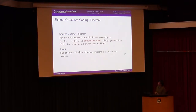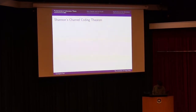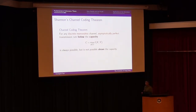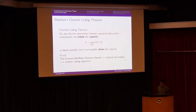The proof of the source coding theorem follows from the Shannon-McMillan-Breiman theorem and typical set analysis. The second theorem — Shannon's channel coding theorem — characterizes how fast you can transmit information reliably. For each channel there is a capacity threshold: below capacity you can always transmit reliably, but above it you cannot.